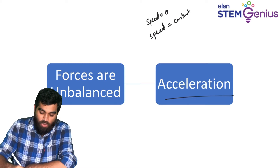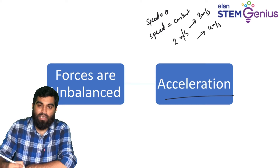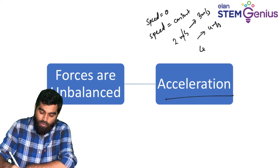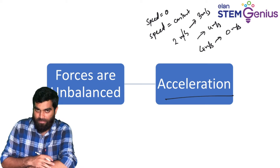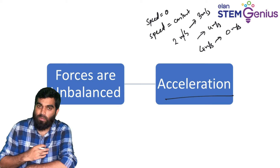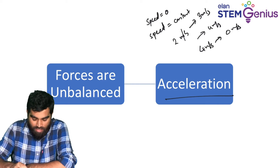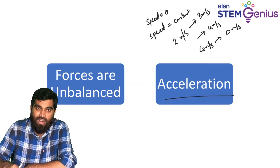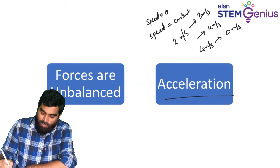For example, speed is 2 meters per second, then 3 meters per second, then 4 meters per second — there is a change in speed with respect to time, and we call that acceleration. So if forces are unbalanced, there will be an acceleration on that object.